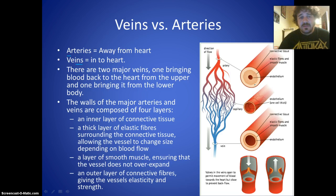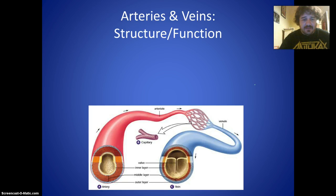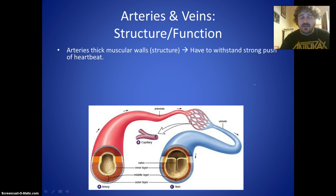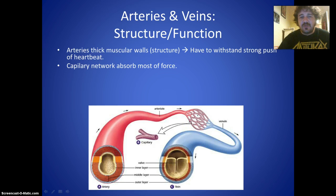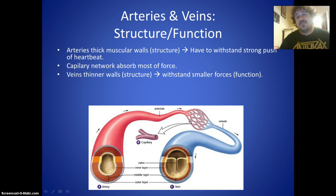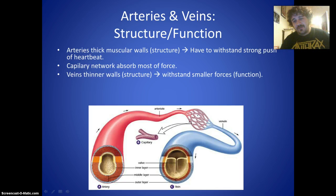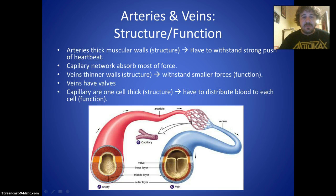Arteries are much thicker because they have to carry blood over much longer distances and must withstand the strong push from the heartbeat — high pressure from big space to little space. The capillary network absorbs most of that force, so by the time blood reaches the veins it has lost most of its pressure, meaning veins are allowed to have a much thinner wall.